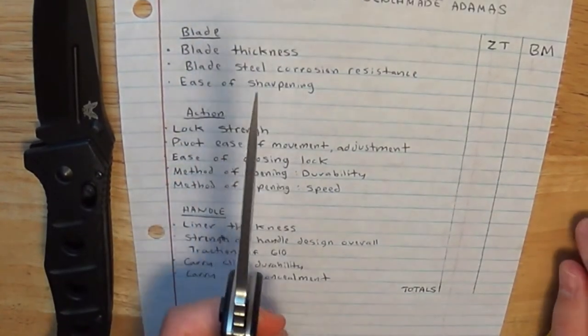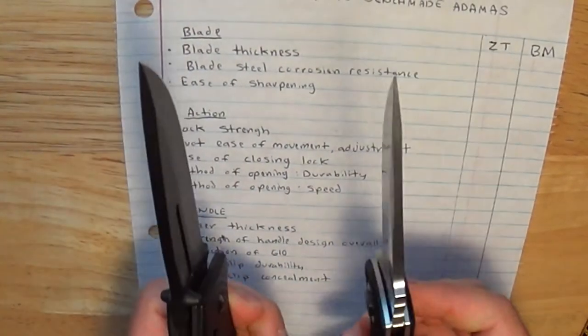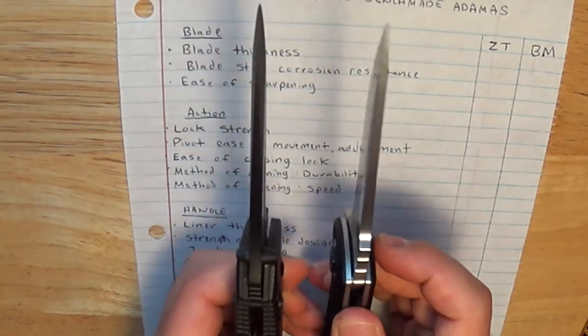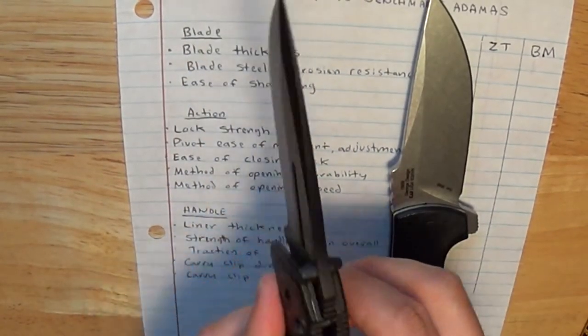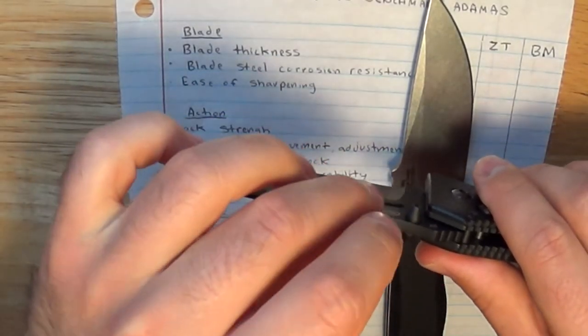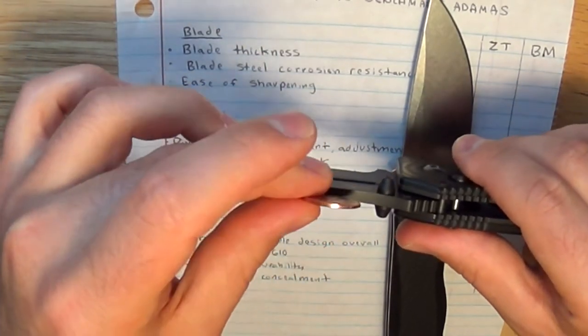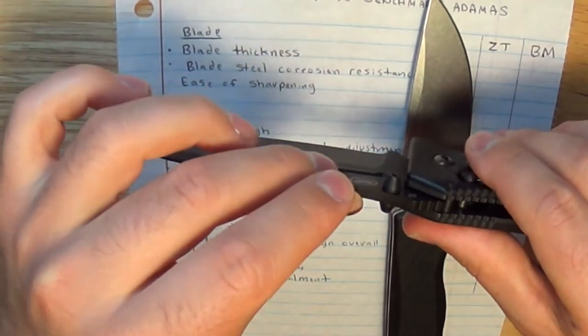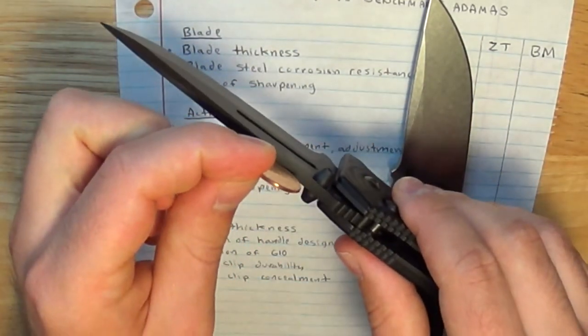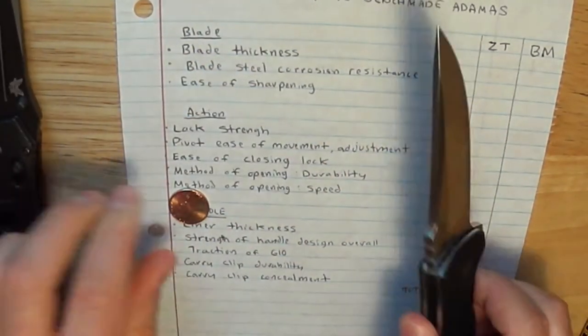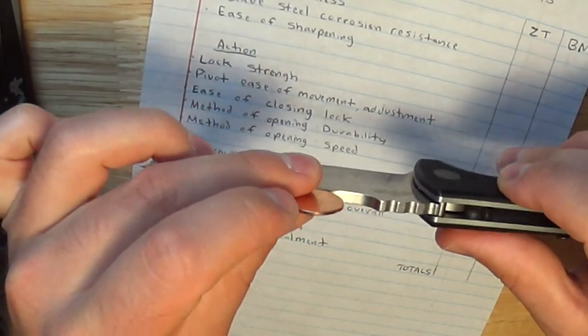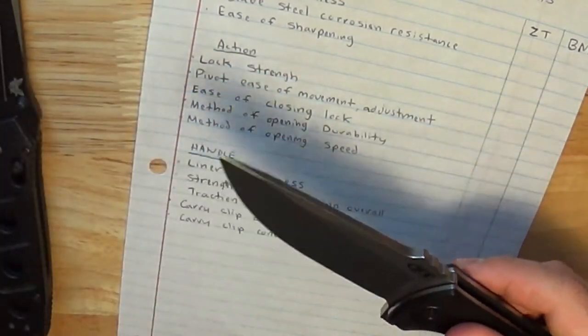Alright, so we have the blades. In terms of blade thickness, Benchmade wins. It's slightly thicker, if we look at that thickness here, compared to a brand new penny. It's about as thick as almost three pennies. Your ZT isn't much thinner. It's a little thinner toward the point, but not a whole lot. They're both thick knives.